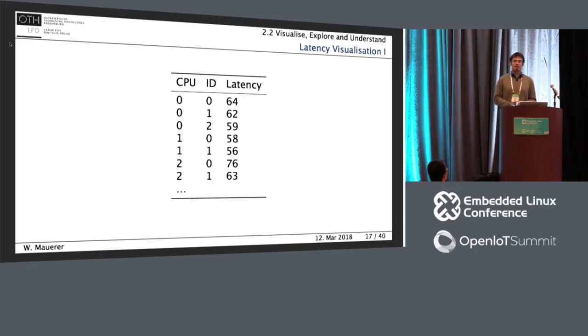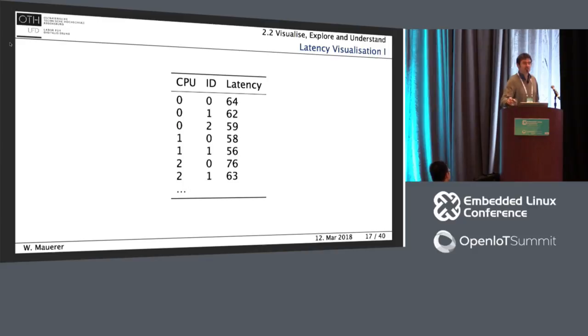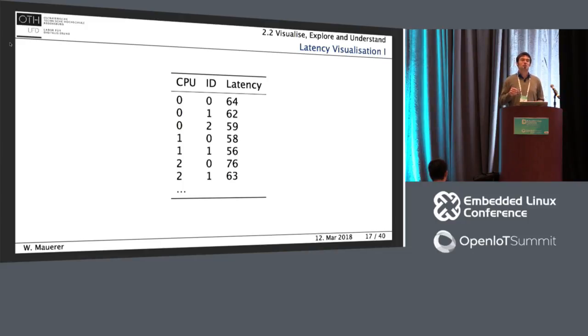The data sets that I'm considering is what you typically get from latency analysis, like when you're running a cyclic test on a preempt RT system. I've done that on a system with multiple CPUs, I guess it had four CPUs that are numbering from zero to four. I'm recording an identifier with every measure that I'm taking, and I'm recording the measured value, which is a latency that I'm observing in a real-time system. Very simple data set, yet you will see that this data set already contains quite a lot of information.